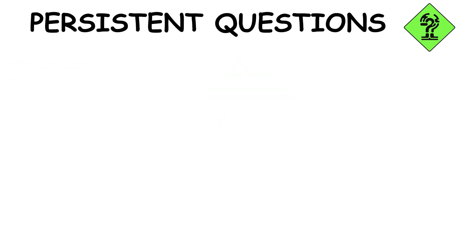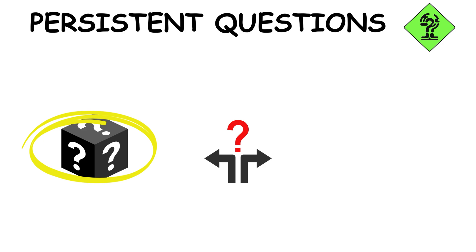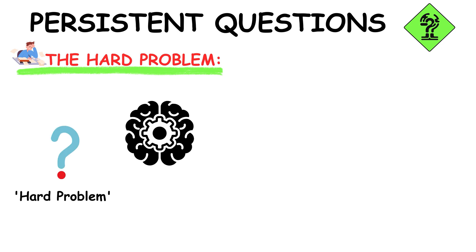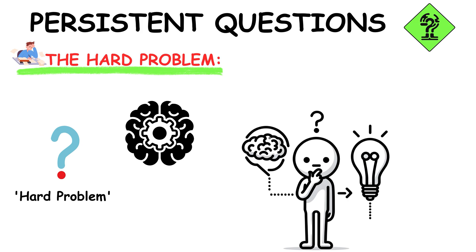Persistent questions highlight the enduring mysteries and philosophical dilemmas that continue to intrigue those studying consciousness. Despite advances, the hard problem remains: How do physical processes in the brain give rise to subjective experience? It's the enduring mystery of how matter makes mind, captivating scientists and philosophers alike.